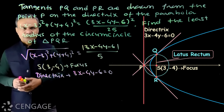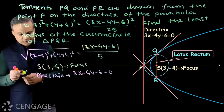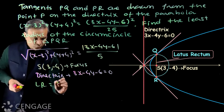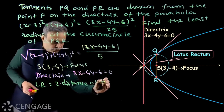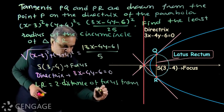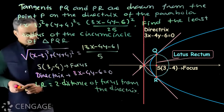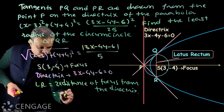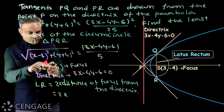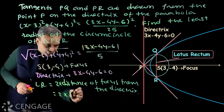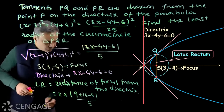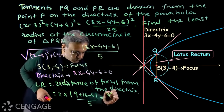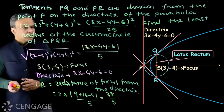What is the latus rectum of this parabola? The formula is: length of latus rectum equals 2 times the distance of the focus from the directrix. So we compute: 2 multiplied by the distance of point (3, -4) from the line 3x minus 4y minus 6 equals 0, which gives (9 plus 16 minus 6) over 5 equals 19 over 5. Multiplying by 2 gives 38 over 5. So the latus rectum length is 38/5, and this is the least radius of the circumcircle.